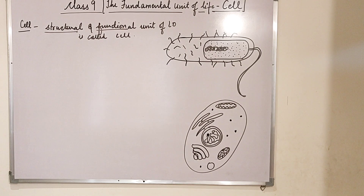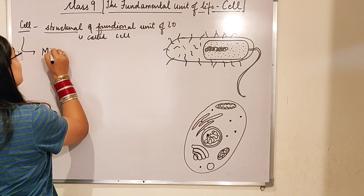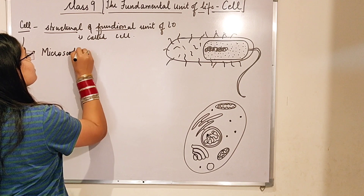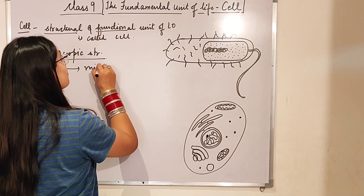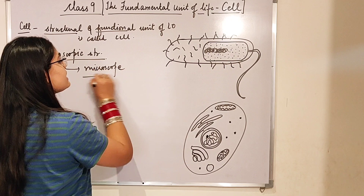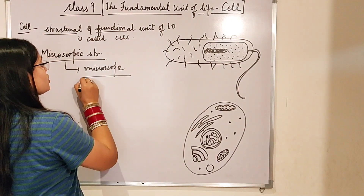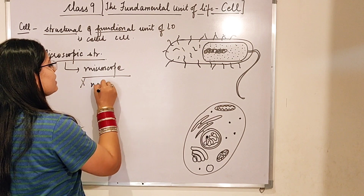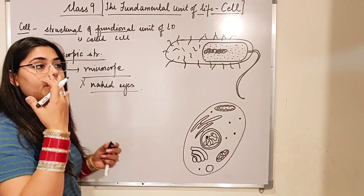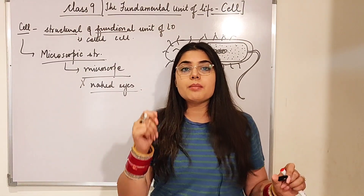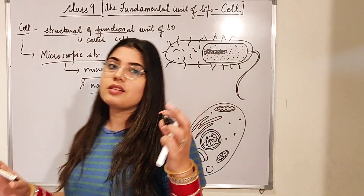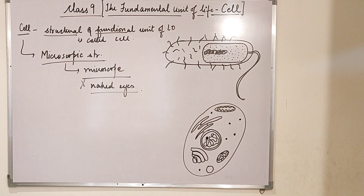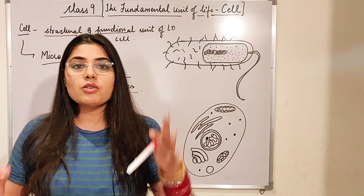Now, the cell is a microscopic structure — it can only be seen with the help of a microscope. If you try to see cells with your naked eyes, you will not be able to see them. You either need a microscope or a magnifying glass. So these cells are microscopic structures — you cannot see them with your naked eyes.